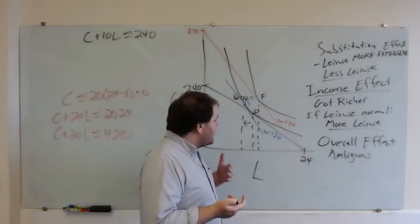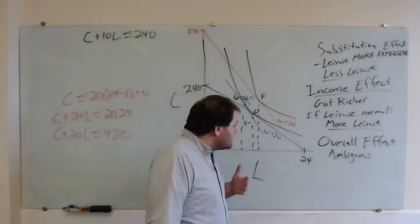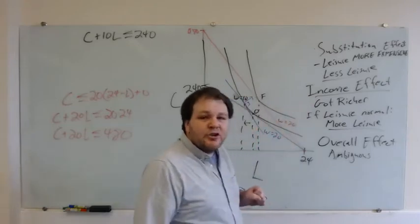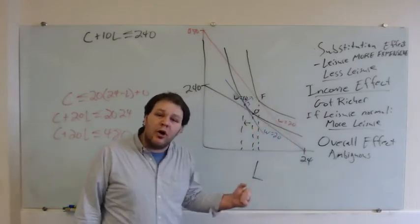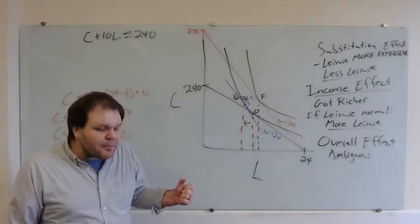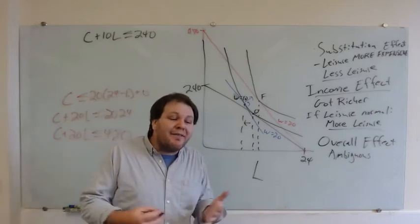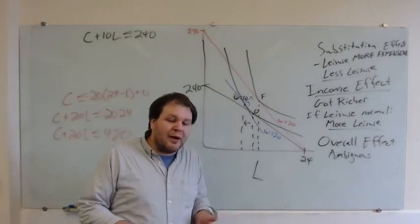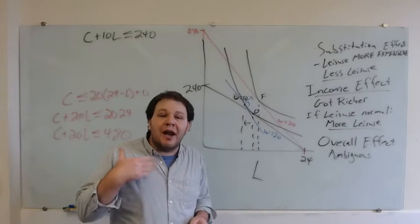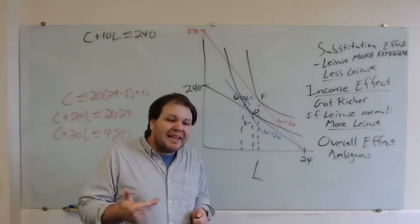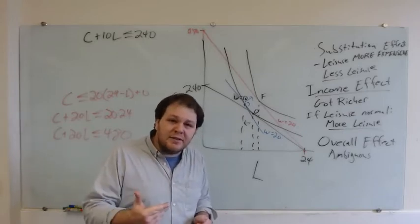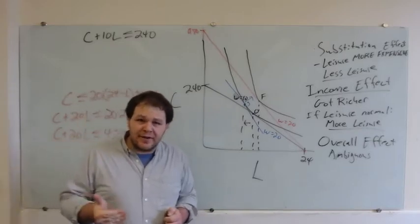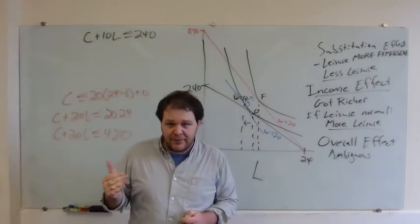The question then is: under what circumstances do we expect one effect to predominate over the other? We want to first ask: do we always expect leisure to be a normal good? The obvious answer might be yes, but let's think about what it means for a good to be inferior, and what circumstances lead us to believe a good can be inferior.